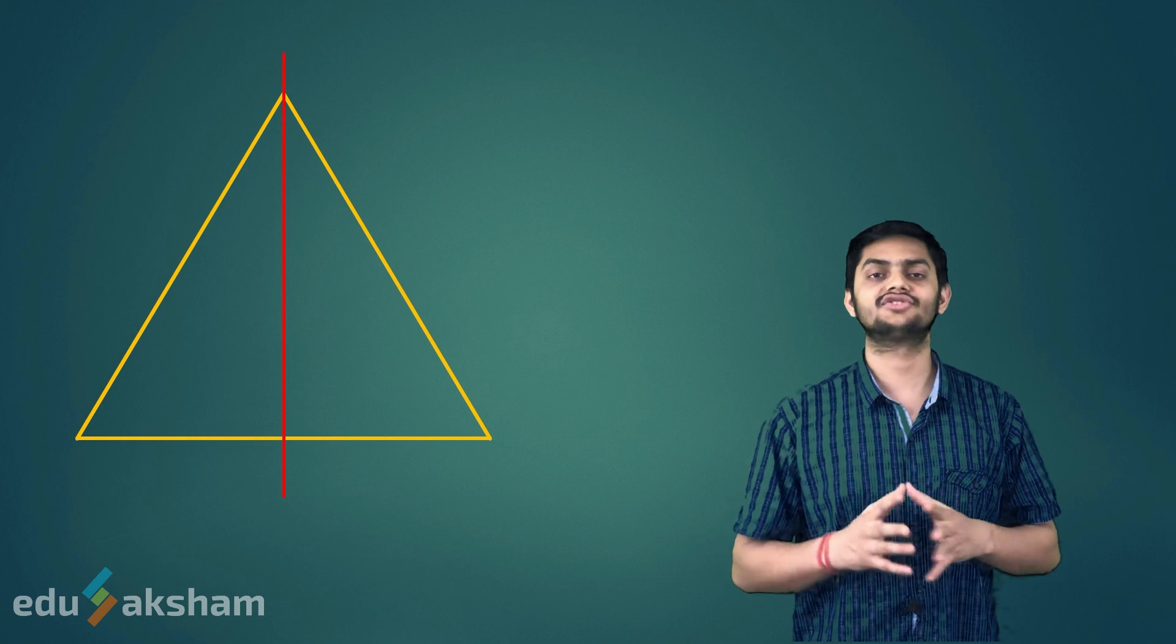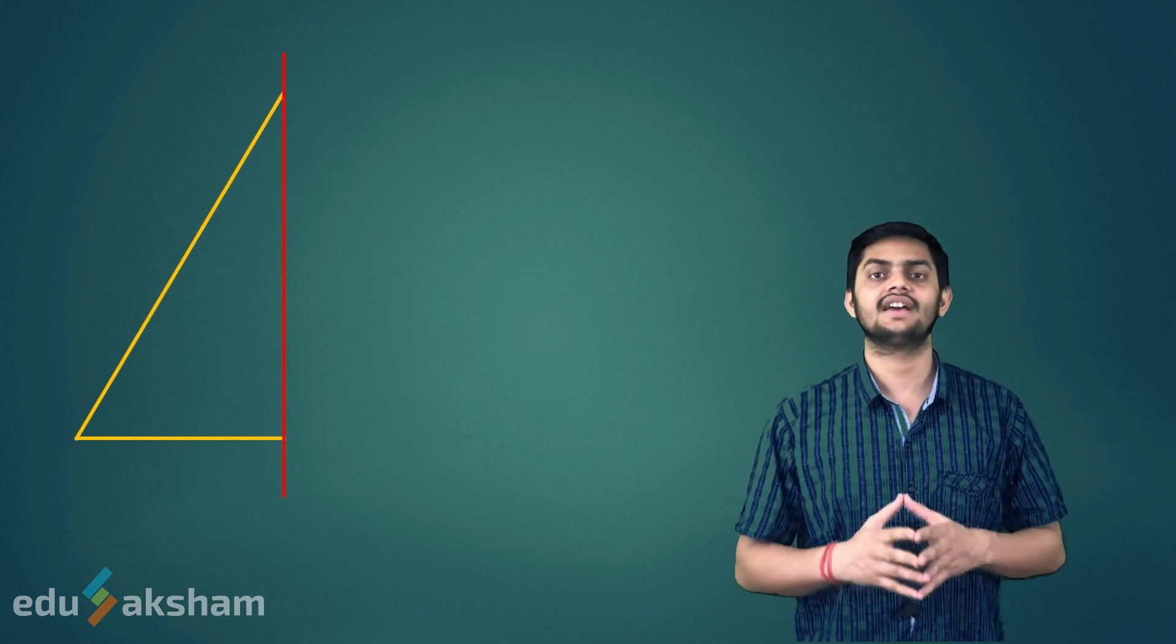Now, let us take a look at some more geometrical shapes. Let us take an equilateral triangle. When we draw a vertical line like this, the line acts as a line of symmetry.